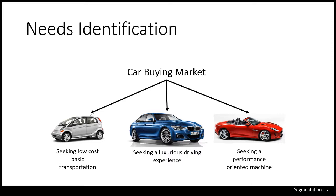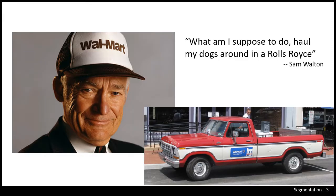You would think on the surface that these differences come down to money — how much income somebody has — but that's not always the case. For example, one of the world's richest men when he was alive, Sam Walton, who founded Walmart, always drove around in a red pickup truck even after he was worth billions of dollars. He's quoted as saying, 'What am I supposed to do, haul my dogs around in a Rolls Royce?' This goes beyond just money, and that's where we have to start understanding why people differ in what they're trying to buy.